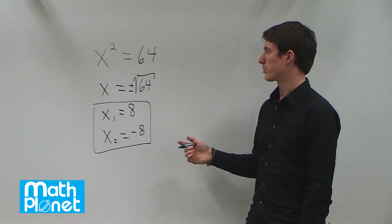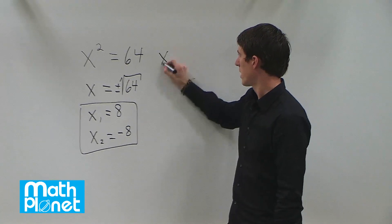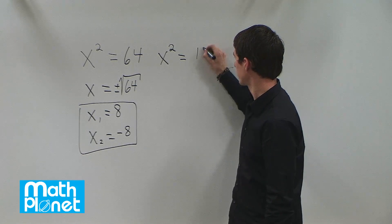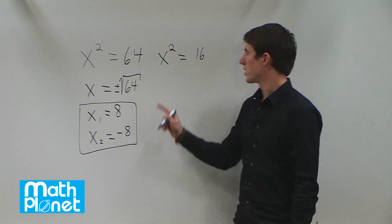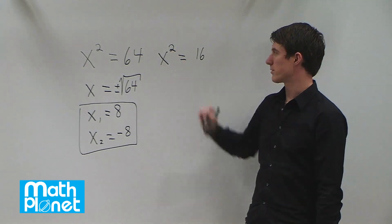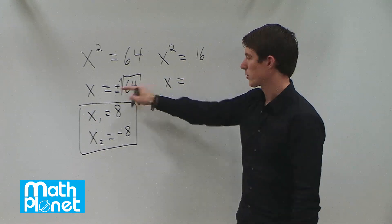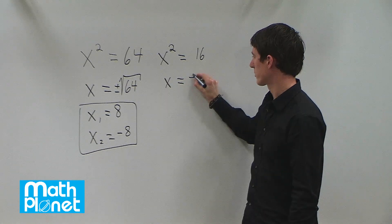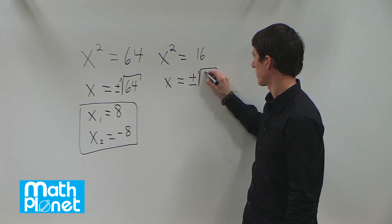Let's do another really similar problem just to make sure we have the idea right. If we have x squared equals 16, we need to do the exact same process. We take the square root of both sides — the inverse operation of the square — and we get x equals plus or minus, because it's a quadratic and we have two answers, plus or minus the square root of 16.